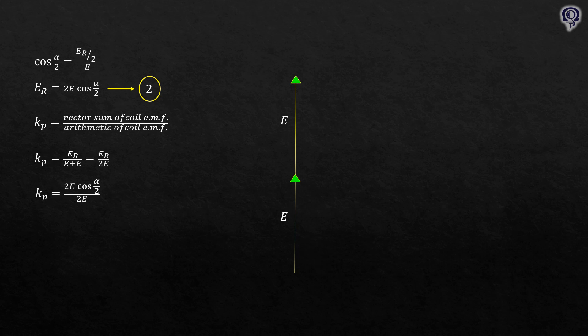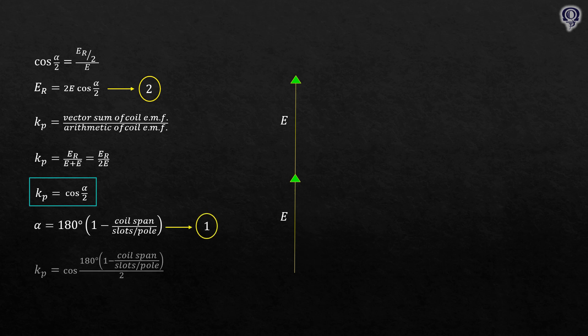Substitute the value of ER, cancel out similar terms. Then voila! We arrive at the formula in terms of short pitch angle. Life would have been very easy if alpha is given, right? But what if not? That's the use of our equation 1. Substitute this into cosine alpha over 2.